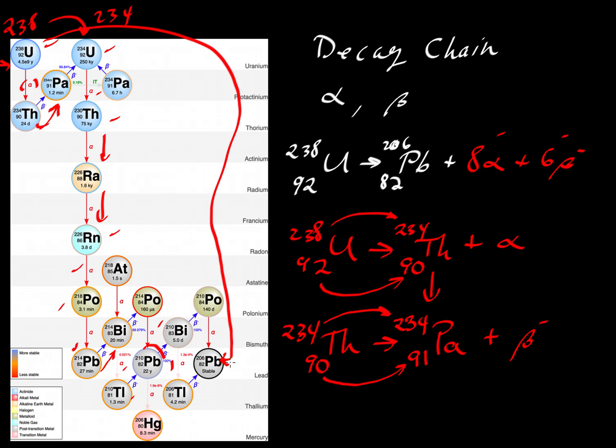There are a couple of routes to get us to lead-206. I'll let you work through this map, but no matter which set of arrows you follow, if you start here with uranium-238 and end here with lead-206, you should always end up counting up eight alpha decays and a total of six beta decays. Let's take one of these chains.